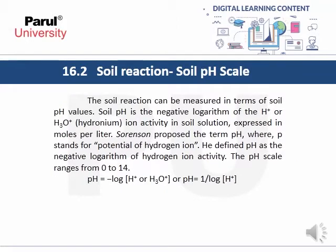Soil reaction and the soil pH scale: Soil reaction can be measured in terms of soil pH values. Soil pH is the negative logarithm of the hydrogen or hydronium ion activity in soil solution, expressed in moles per liter. Sorenson proposed the term pH, where 'P' stands for potential of hydrogen ion. He defined pH as the negative logarithm of hydrogen ion activity, and the pH scale ranges from 0 to 14.